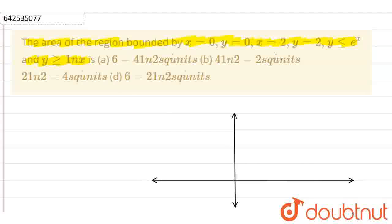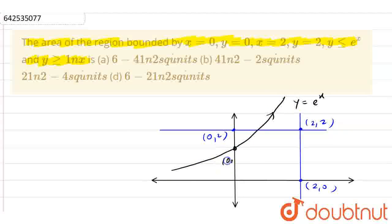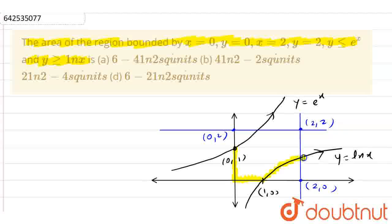First we have x equals 0 and y equals 0 — basically our coordinate axis — and we have x equals 2. So let's suppose this is y equals 2 and this is x equals 2. What we have: this point is (2,2), this is (2,0) and this is (0,2). Now, since y is less than or equal to e to the power x, if this is 1 here, then this is the graph of y equals e to the power x. Similarly, this is the graph of y equals ln x and this point is (1,0). Now we have to find that area.